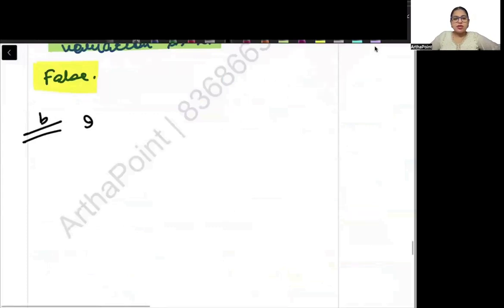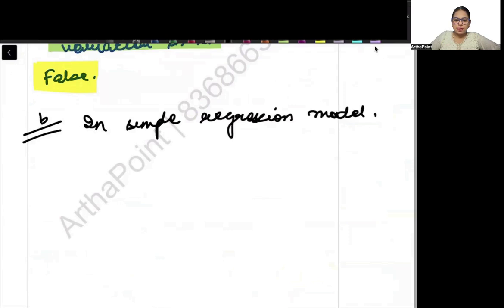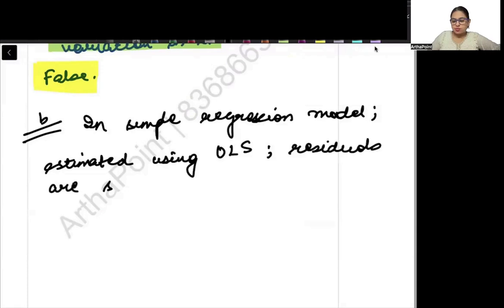The second statement says in a simple regression model estimated using OLS, residuals are such that E bar equals 0 and E bar squared also equals 0. So it's asking what happens to the mean and mean square. What happens to mean and mean square?